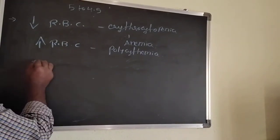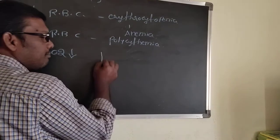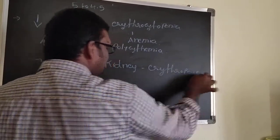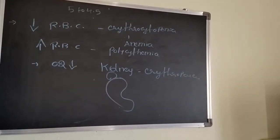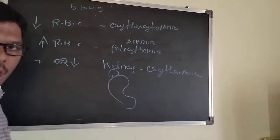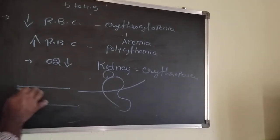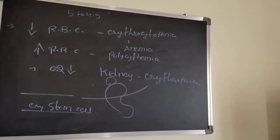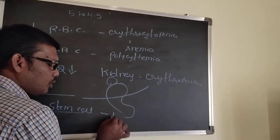When oxygen content is low in the body, the kidney — specifically from the adrenal gland region — releases a hormone called erythropoietin. This erythropoietin hormone enters the bone marrow, where erythropoietical stem cells are present, and stimulates those stem cells to produce RBC.